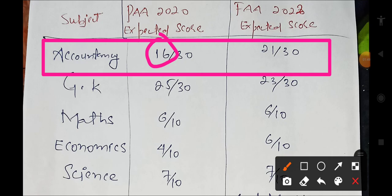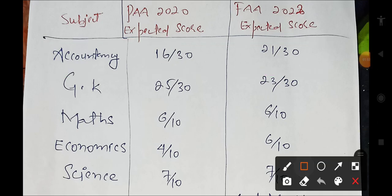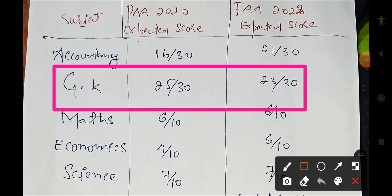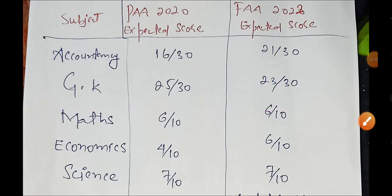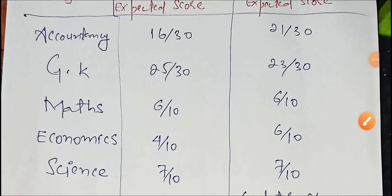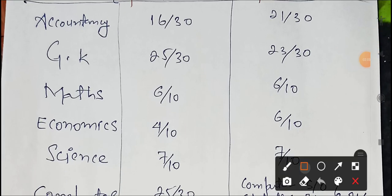For GK, in Punjab Account exam students scored up to 25 marks, and in Finance Account exam they scored 23 marks on average.